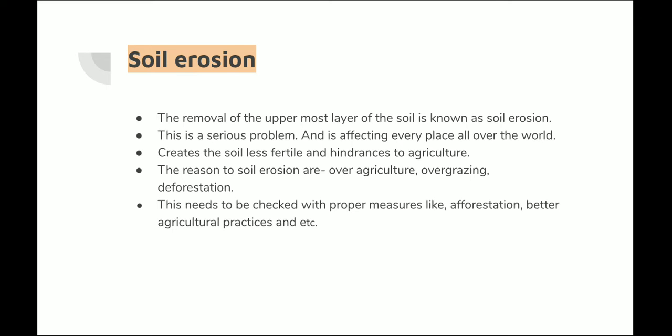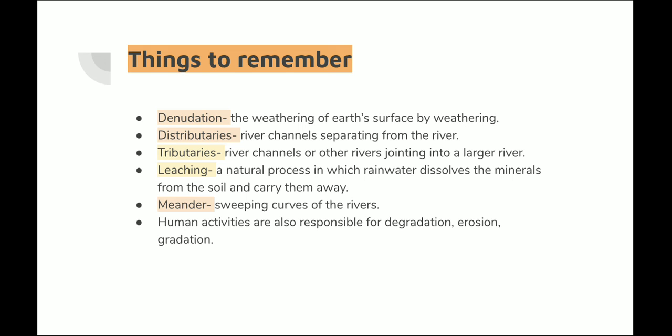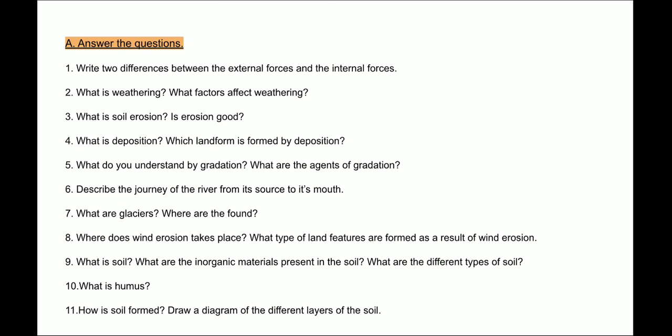There are certain terms to remember. Denudation is the weathering of the Earth's surface. A distributary is a river channel separating from the main river. Tributaries are river channels or other rivers joining into a larger river. Leaching is a natural process in which rainwater dissolves minerals from the soil and carries them away. A meander refers to the sweeping curves of rivers. Human activities are also responsible for degradation, erosion, and aggradation.